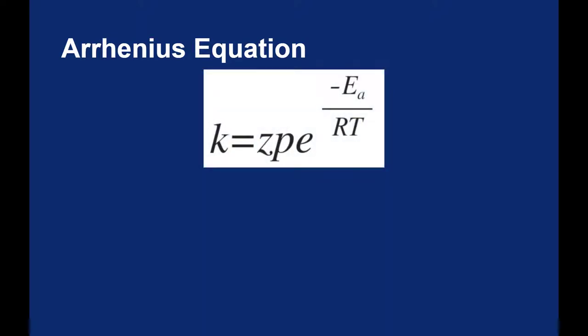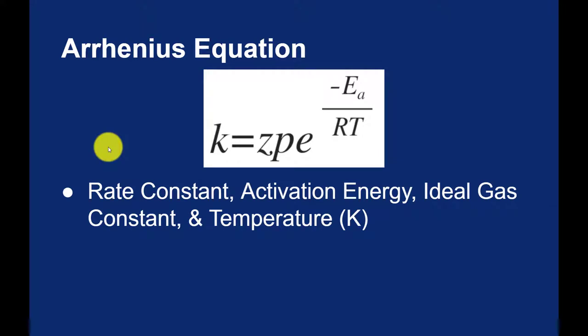The Arrhenius equation shows the relationship between the rate constant, k, and the temperature. Now there are a number of things here in this Arrhenius equation. We have the rate constant. We have E sub A, which we've seen already as our activation energy. We have our old friend R, which is the ideal gas constant. We have our temperature, T, which has to be in Kelvin.